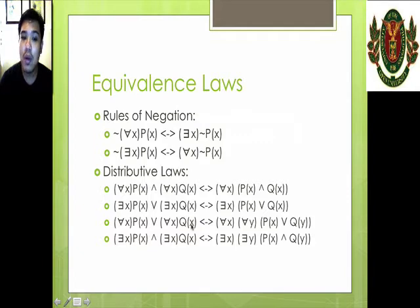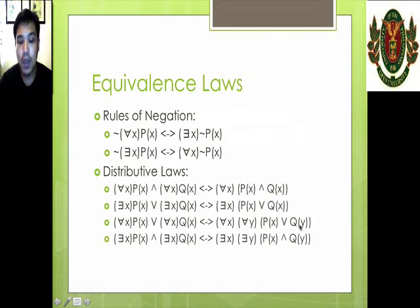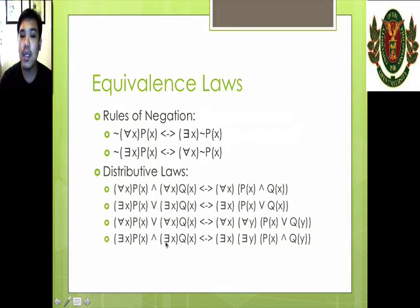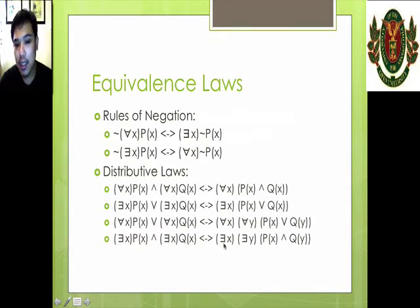And then we can move the two quantifiers out. It will be: for all X and for all Y, quantity P of X or Q of Y. It's the same case when you encounter existentially quantified predicates joined with an AND. If you want to move out the existential quantifier, we change this into another variable first — there exists a Y such that Q of Y. So now we can move it out: there exists an X and there exists a Y such that P of X and Q of Y.